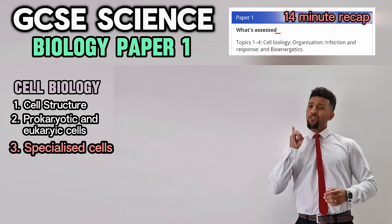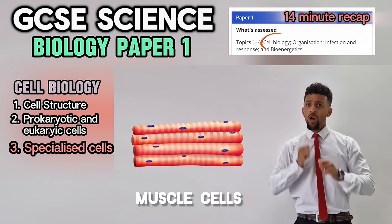Specialised cells — start with a sperm, it's got a long tail. Swims over to the female; if you fuse with an egg you make a boy or a girl. Muscle cells contract and relax, attaching to the bones of the skeleton.